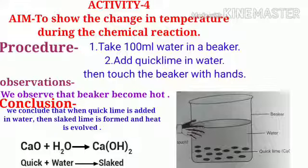Now the chemical equation of this activity is here. CaO plus water H2O gives Ca(OH)2 calcium hydroxide, and slaked lime is formed. Calcium oxide's common name is quicklime, and Ca(OH)2 calcium hydroxide's common name is slaked lime.